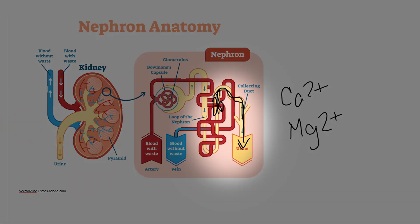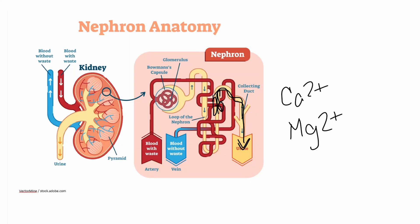So overall, we have a loss of sodium, a loss of potassium, a loss of chloride, calcium, and magnesium from the body, because they're just being excreted in the urine. That is how furosemide works — and also how other loop diuretics work in the kidney.